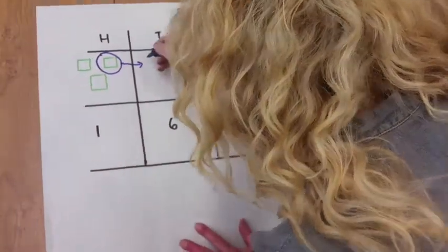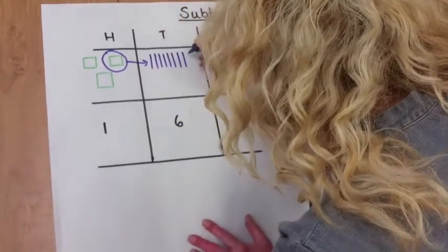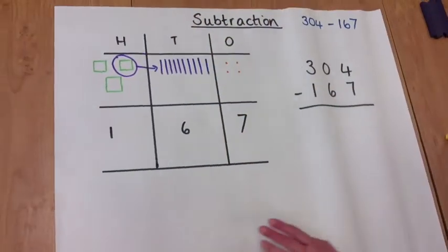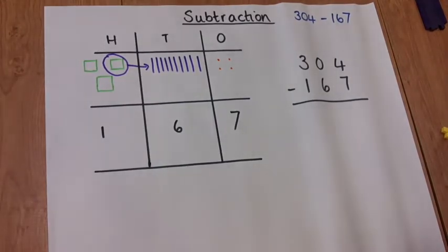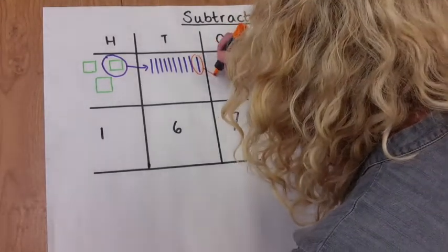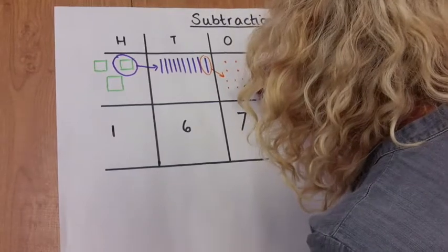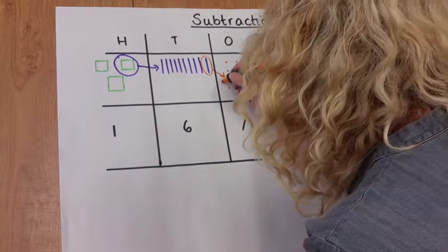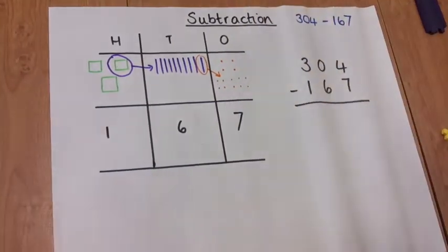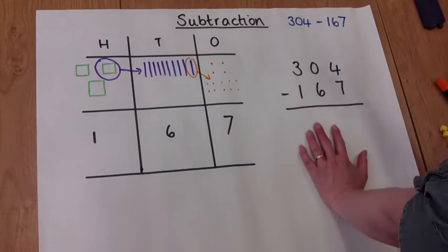Into ten tens. And now we need to regroup one of those tens into ten ones. Now subtracting seven ones.